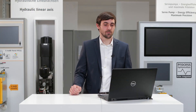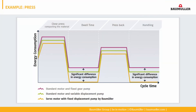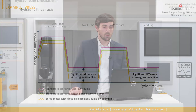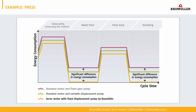Now I'd like to show the energy consumption of three different solutions using two application examples. The first is a press. In this diagram, the purple curve shows a standard motor with fixed gear pump, the green curve shows a standard motor with variable displacement pump, and the yellow curve shows a servo-hydraulic system. During dwell time and handling, the energy consumption is much smaller in a servo-hydraulic system because no flow rate is necessary and the motor is at standstill. At hydraulic systems with standard induction motor and variable displacement pump, the motor still rotates at nominal speed but there is no flow rate, resulting in much higher energy consumption. At a system with standard motor and internal gear pump, the energy consumption is still higher because of the constant flow rate.